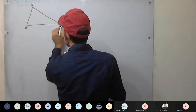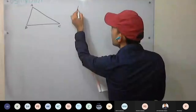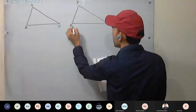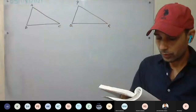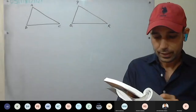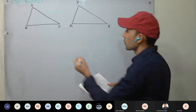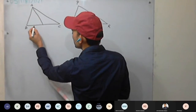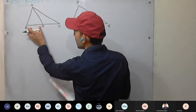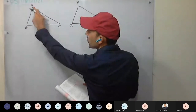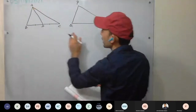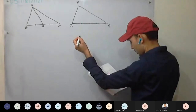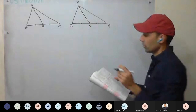Triangle ABC and triangle PQR are given. What more information is given? Side AB, BC and the median AD of the triangle. So we are having a median as well. Median means the midpoint of the opposite side joined to the vertex. These two halves are equal, and similarly for the other triangle.